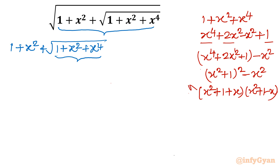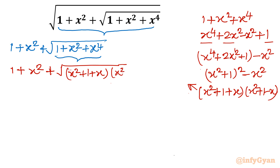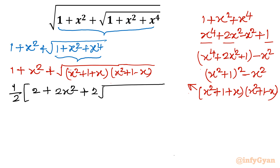Now I apply this directly. So I write 1 plus x square plus square root of (x square plus 1 plus x)(x square plus 1 minus x). The second algebraic manipulation: I divide by 2 and multiply by 2. So I write 2 plus 2x square plus 2 times square root of (x square plus 1 plus x)(x square plus 1 minus x), all unchanged.